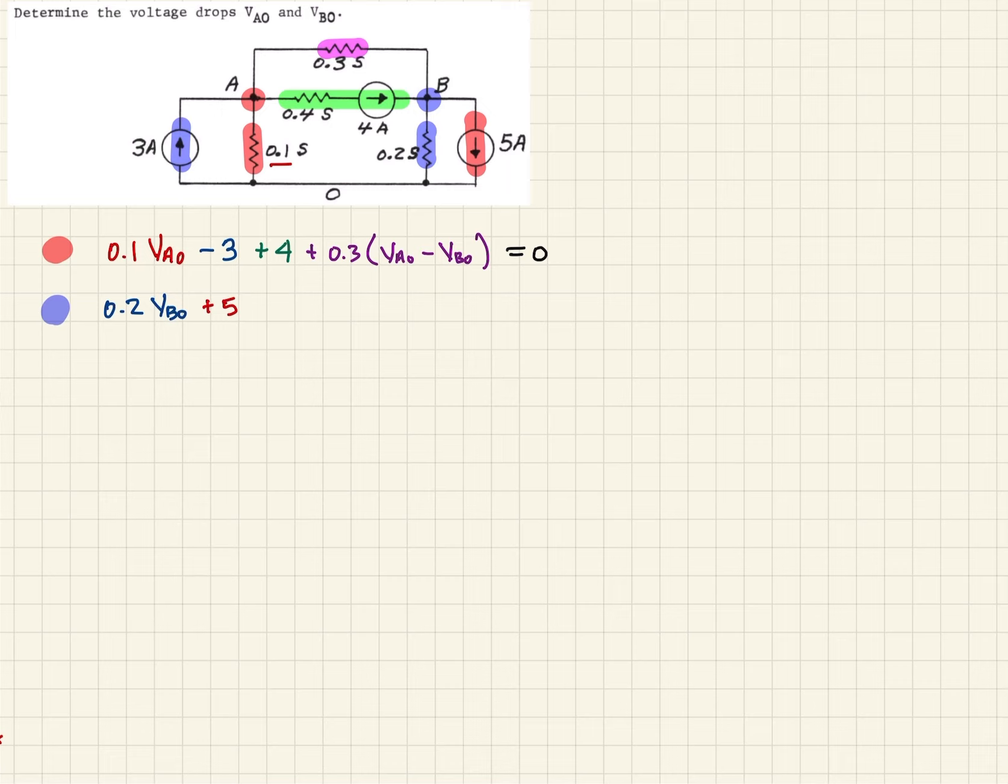And then we'll keep the green. If we look at the green again, that's the same, but this time the current's entering our node B. So then that's going to be minus 4 in this case.